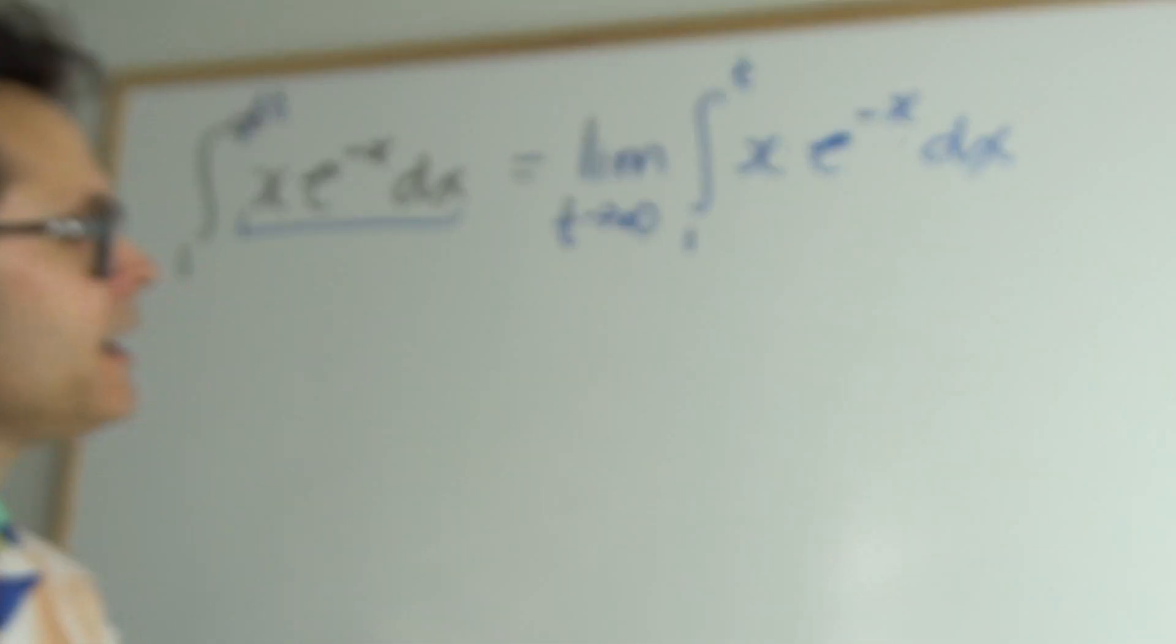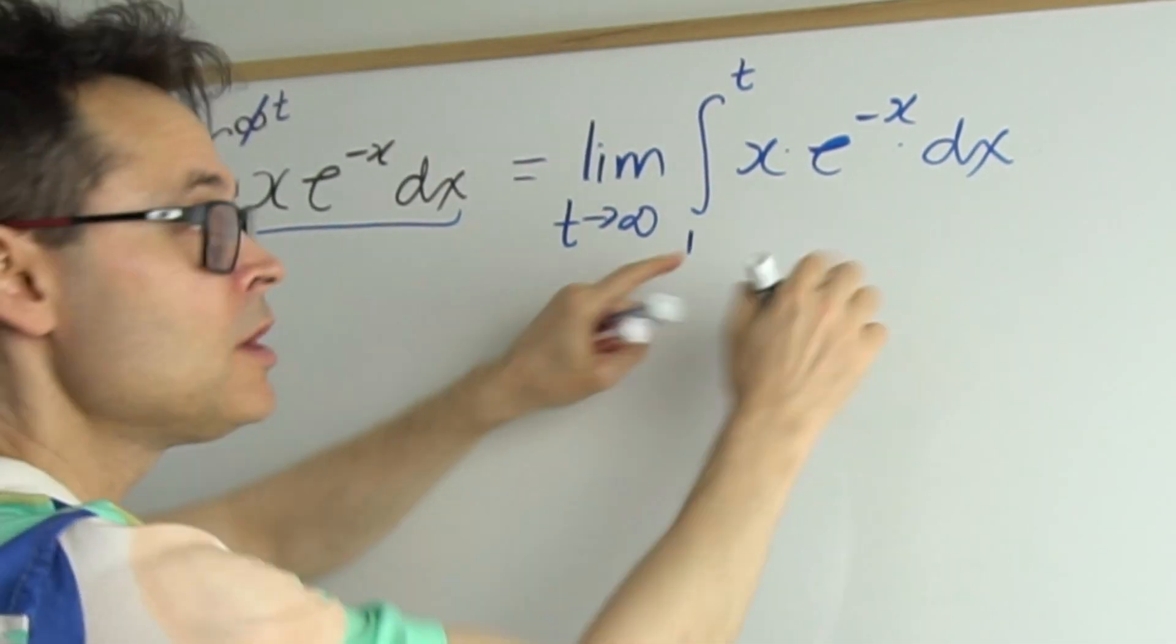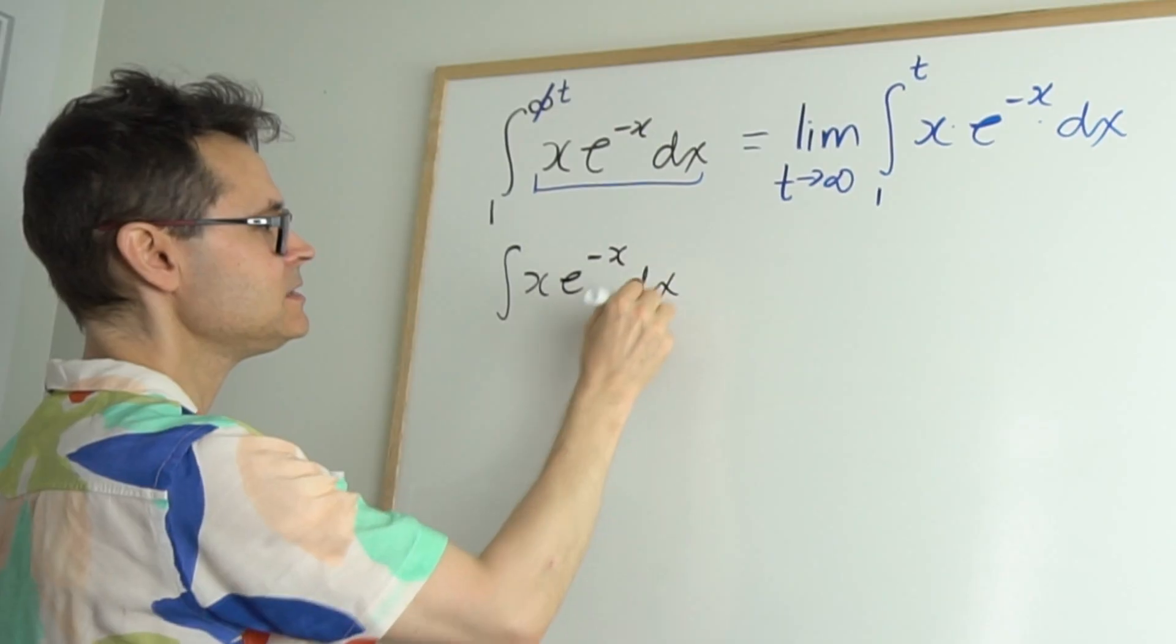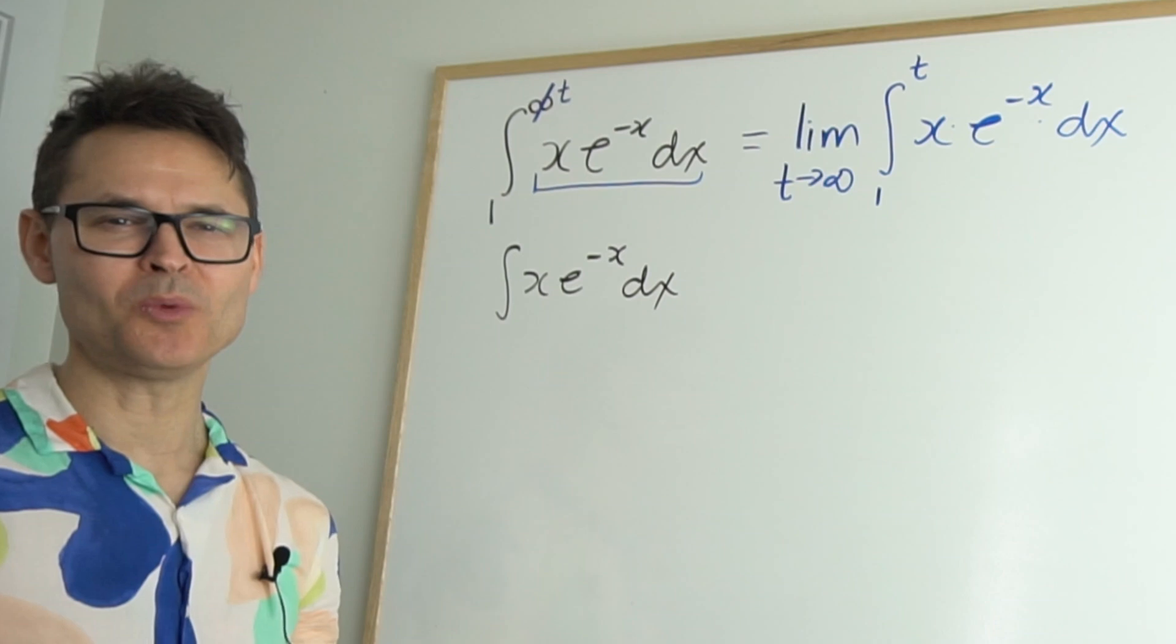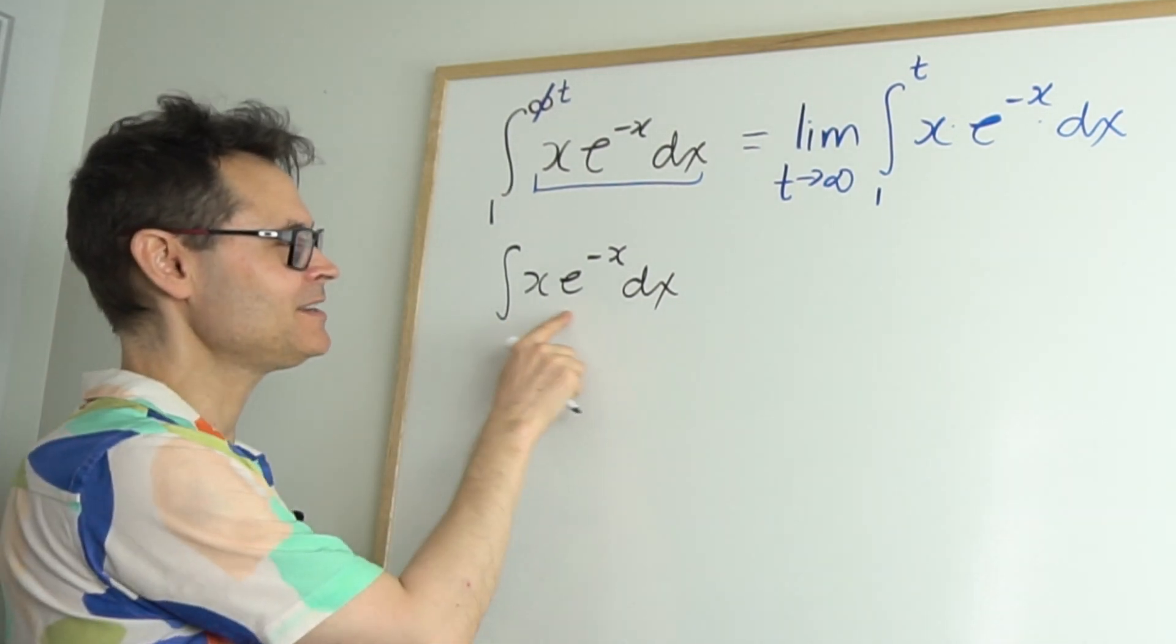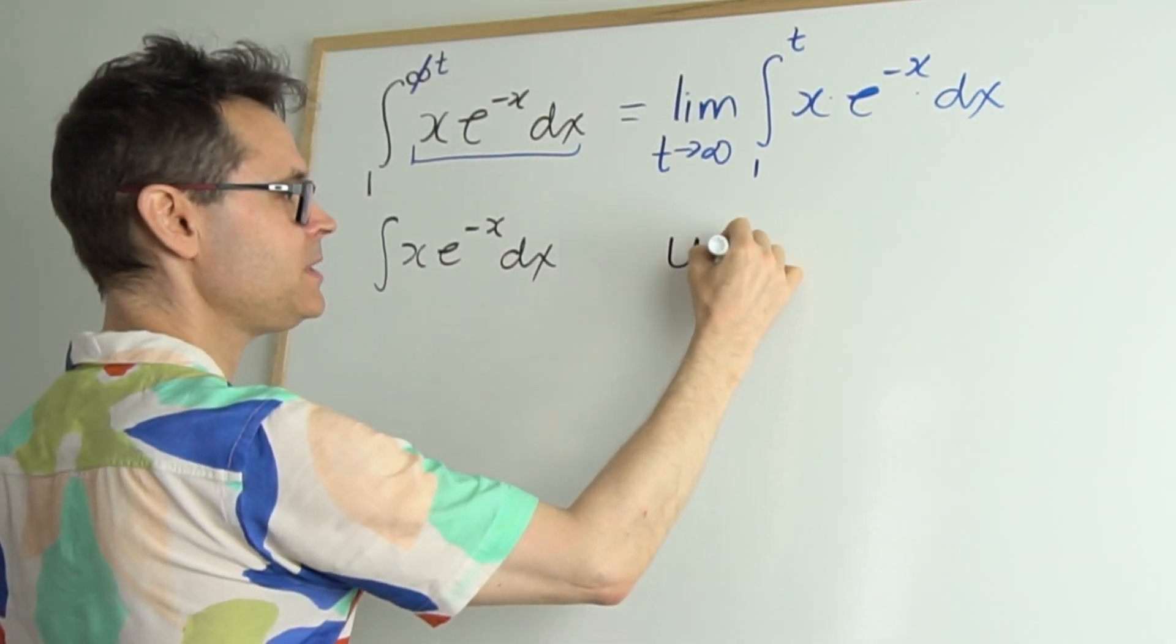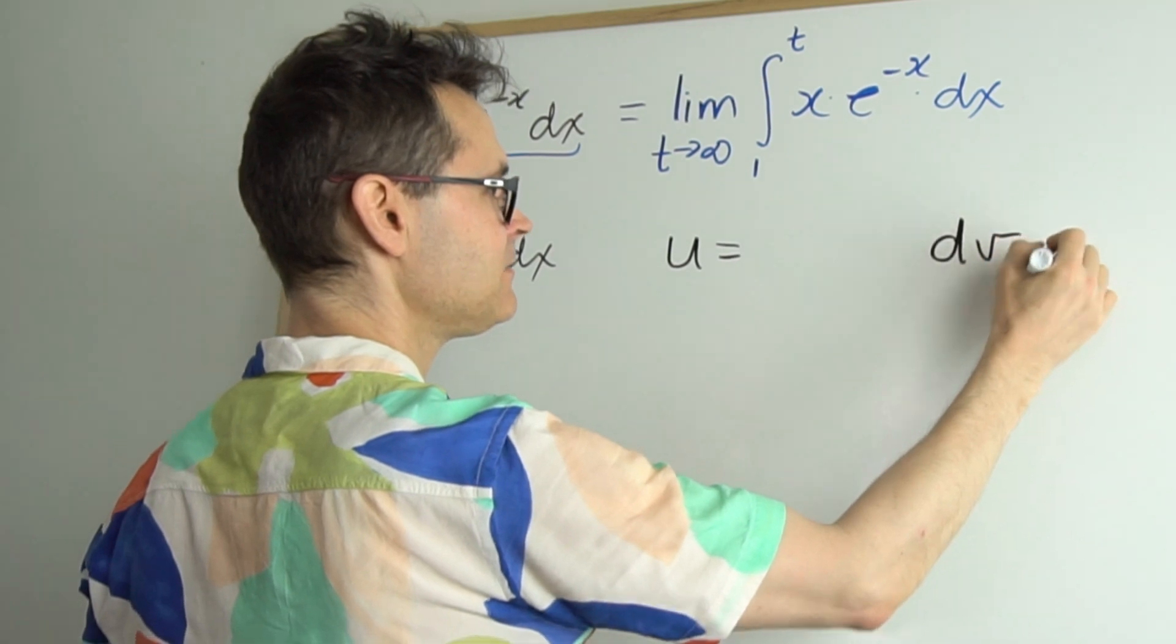Okay and so at this stage what we do is we sort of just pay attention mainly to the integral. So we can integrate. I won't worry about the limits of integration. We'll just integrate x e to the negative x dx. And this one I'm going to use parts. I'm assuming you know parts. Parts means take the integrand and break it up into parts hence the name.